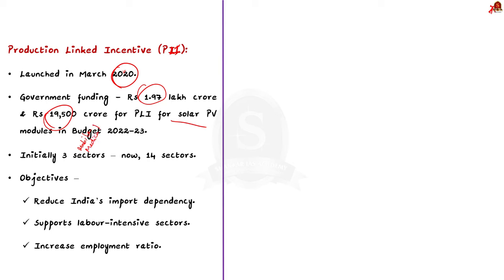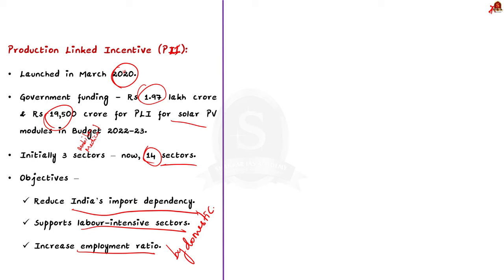Regarding the objectives, the government introduced the scheme to reduce India's dependence on China and other foreign countries. It supports labour-intensive sectors and aims to increase the employment ratio in India. The scheme provides incentives to reduce import bills and boost domestic production. It also invites foreign companies to set up units in India and encourages domestic enterprises to expand their production.